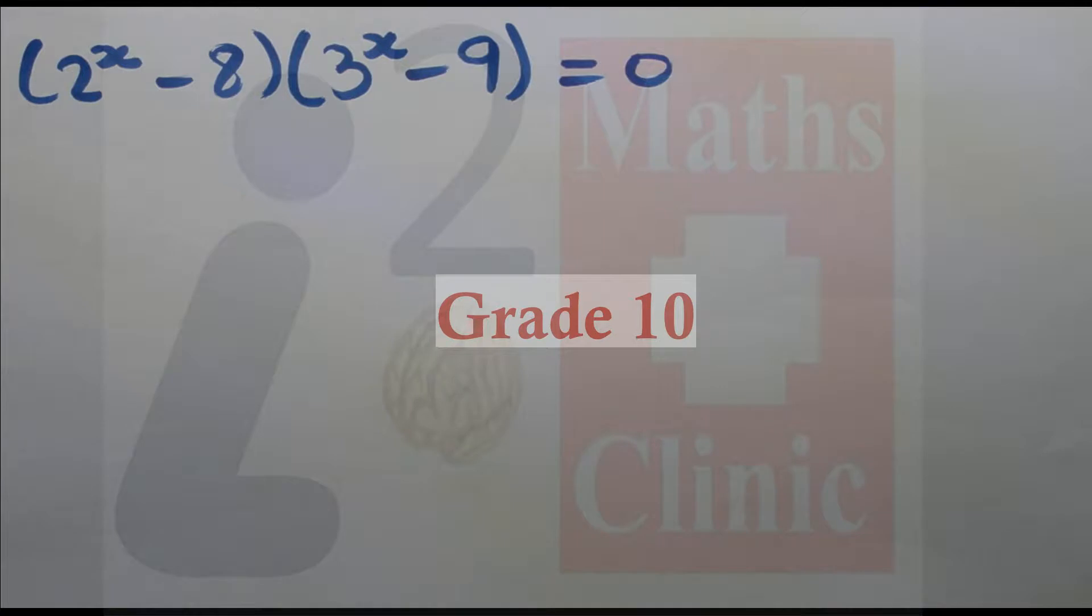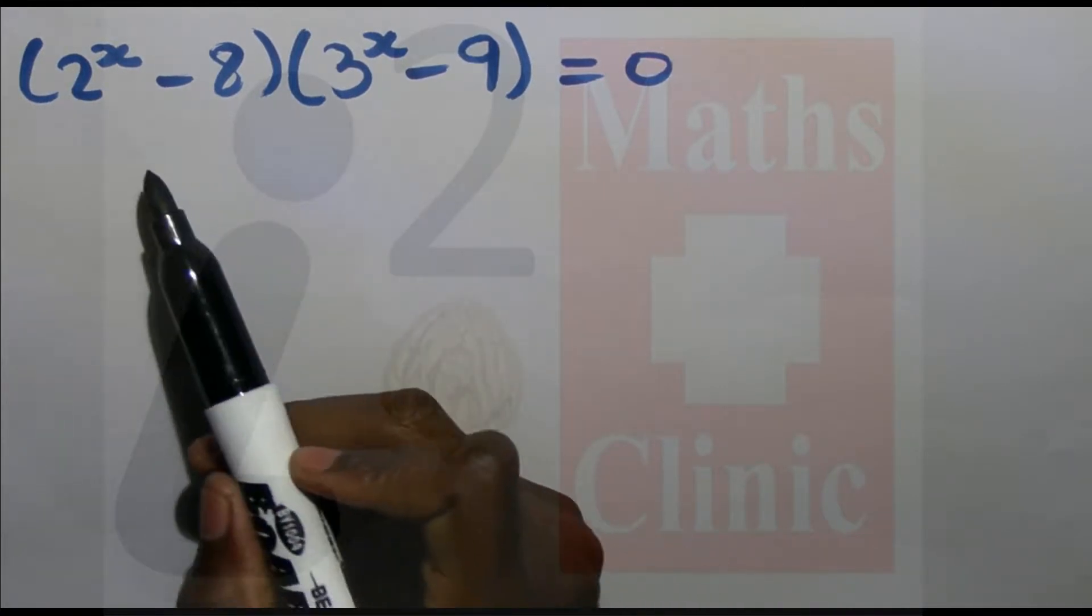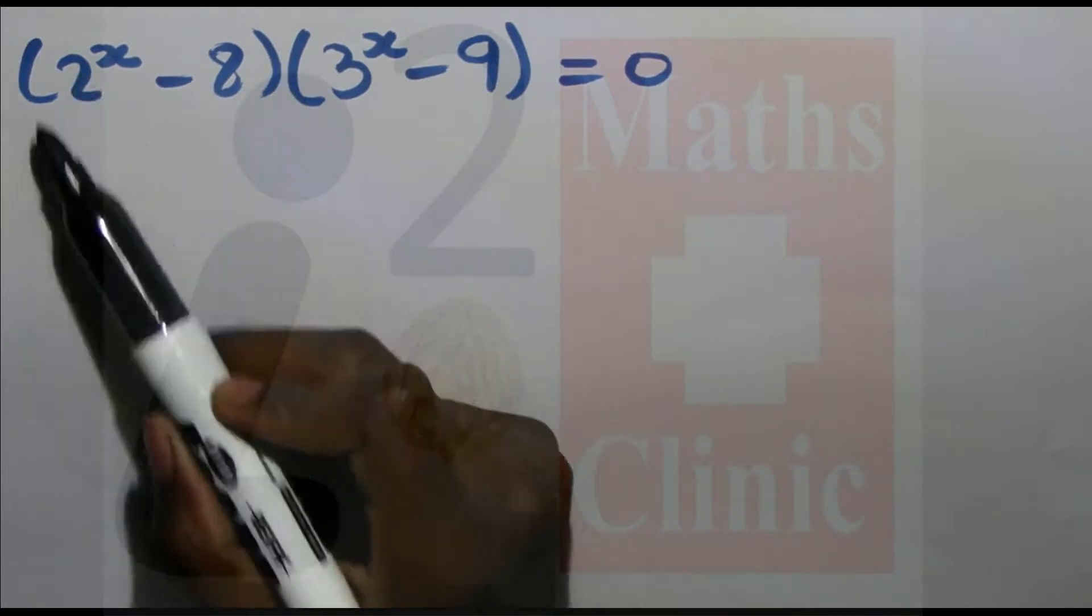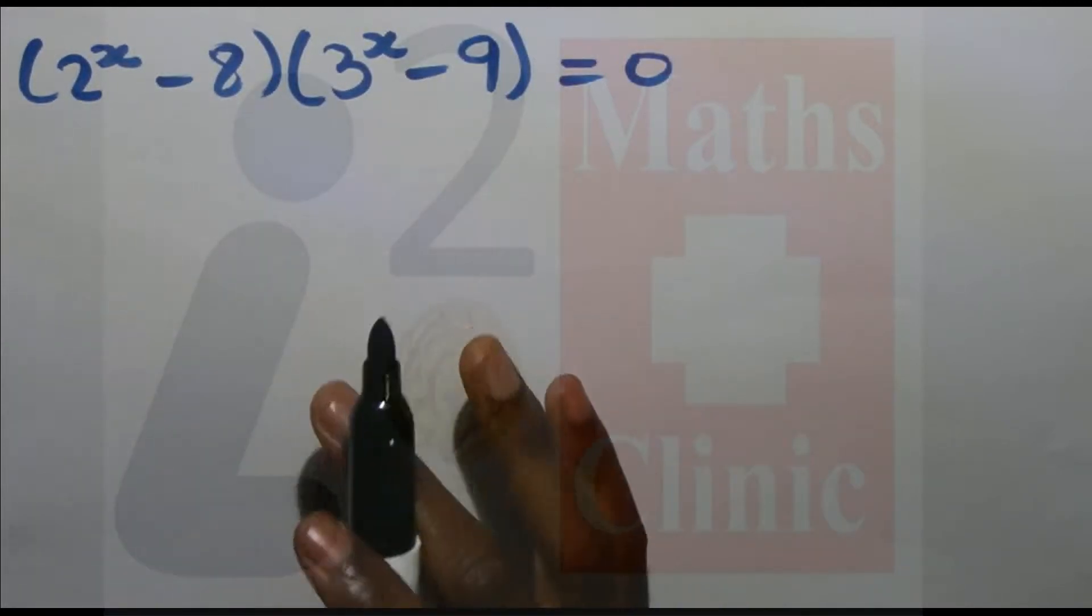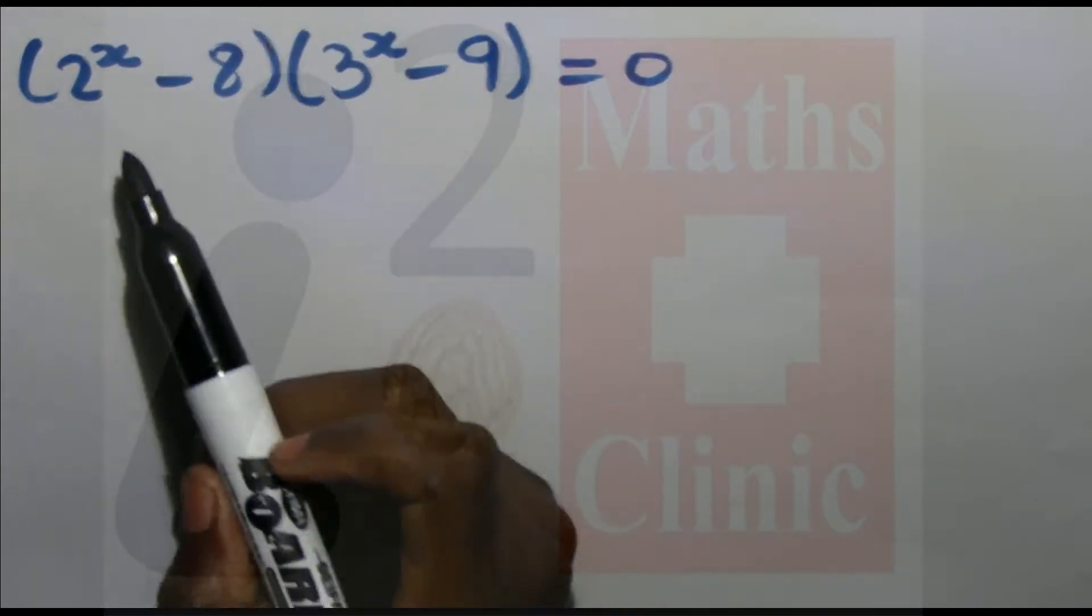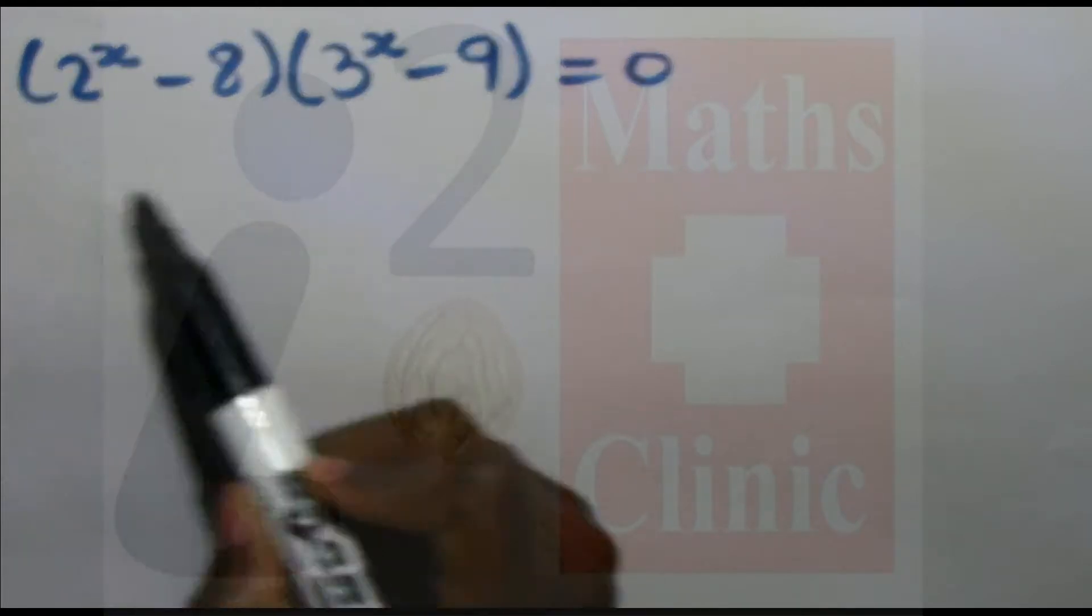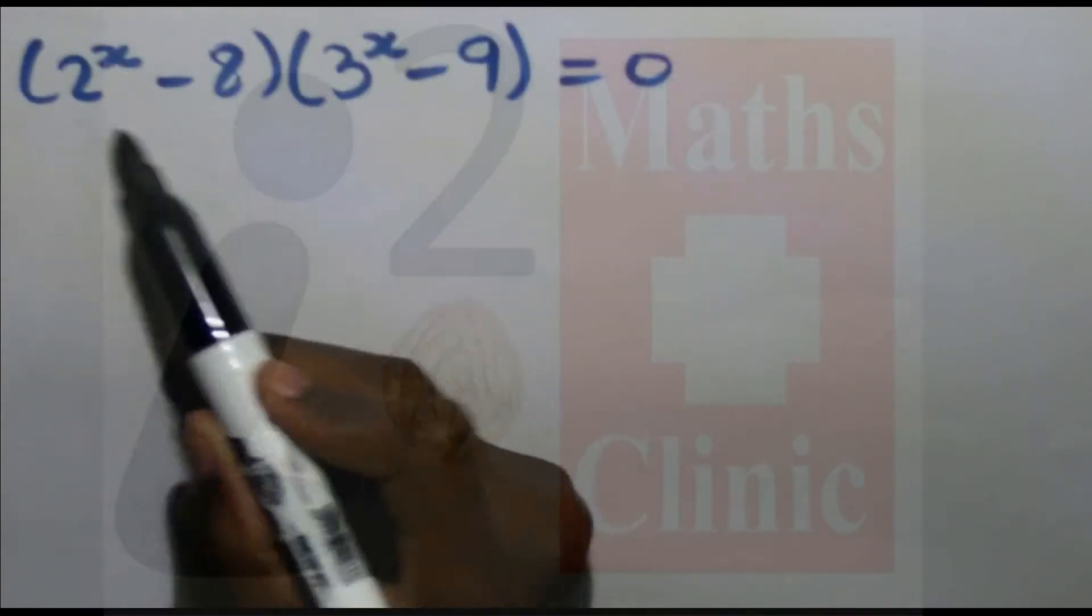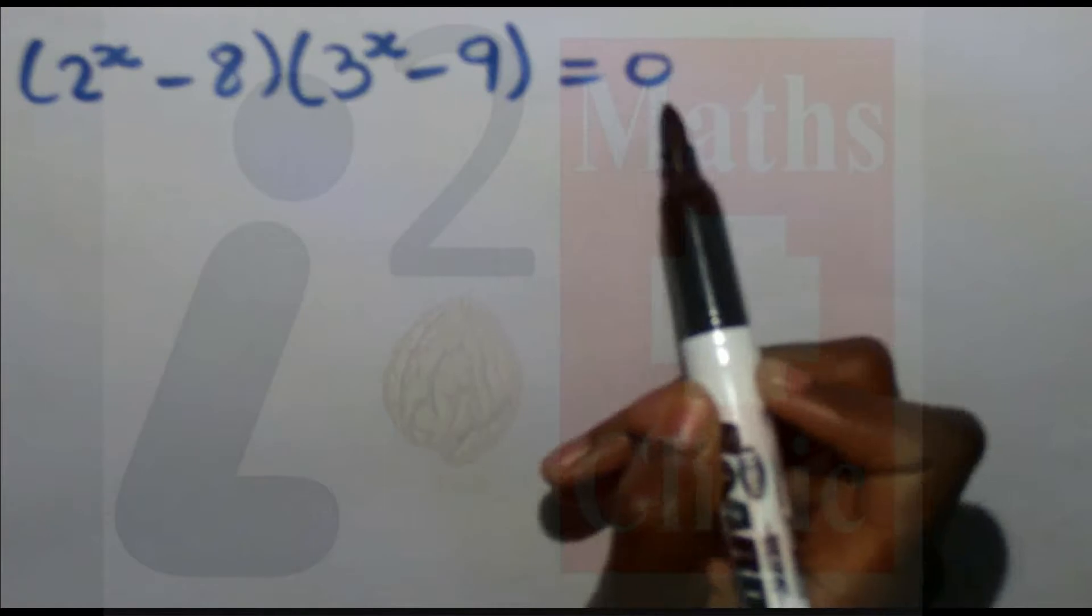Now let's solve this exponential equation. We're going to factorize it. When you have brackets, you set each bracket equal to zero, just like when solving quadratic equations. If you factorize, when a bracket equals zero...